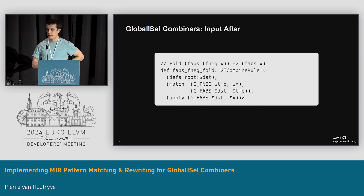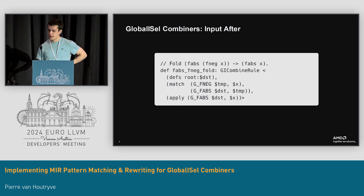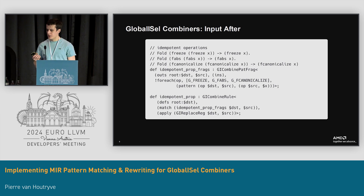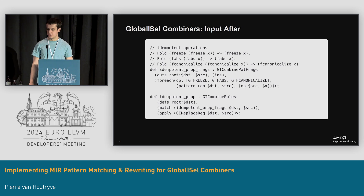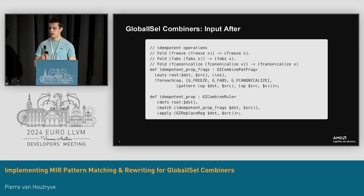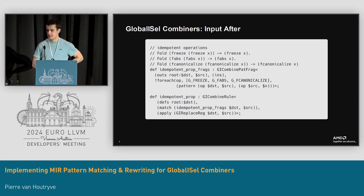This is what the rule we saw before now looks like with this refactor using MIR patterns. All the C++ is eliminated for this trivial re-matching — we just directly match the opcode and emit the output. The other rule is a bit more complex, but we also have a pat-frag system which allows you to specify multiple possible matches and use that kind of template as you would use another instruction. In this case, it would duplicate the rule three times — for freeze, abs, and canonicalize — automatically.